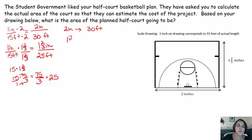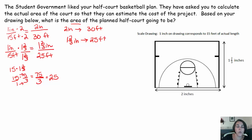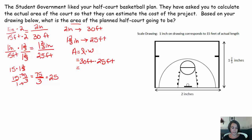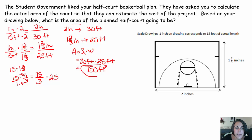So one and two thirds inches on my diagram represents 25 feet on the actual court. Now if I want to find the area of the actual court, area is length times width. I do 30 feet times 25 feet — use your calculator — 30 times 25 is 750. So the actual area is 750 square feet.